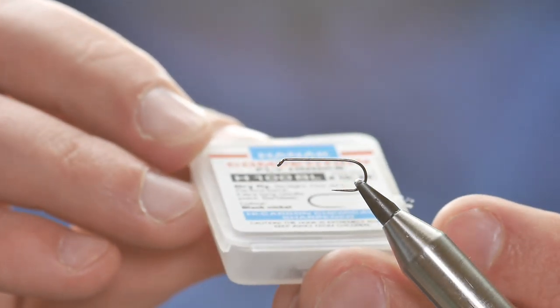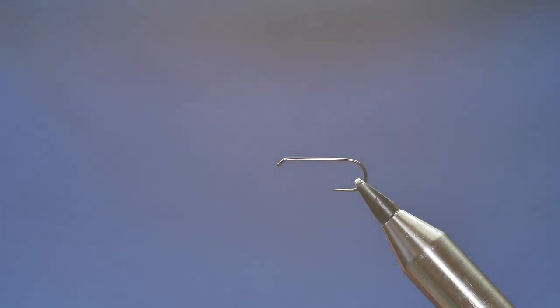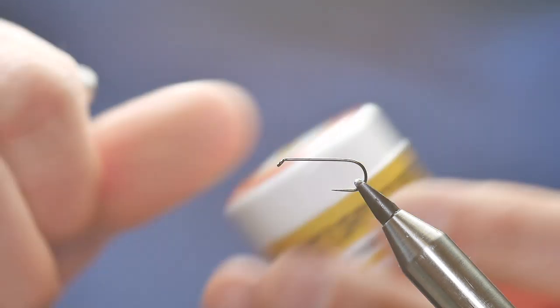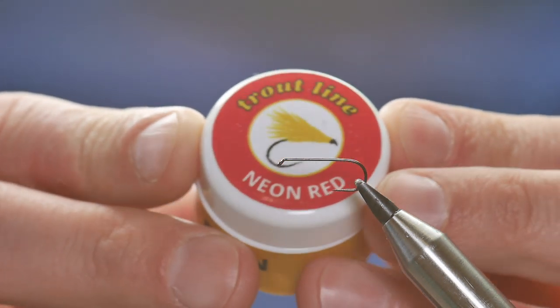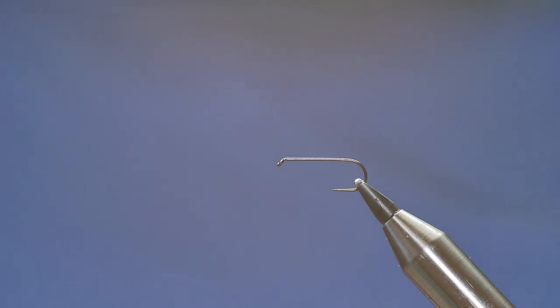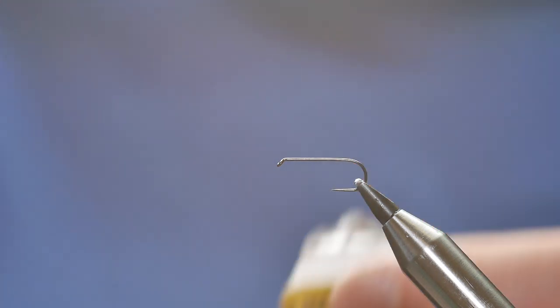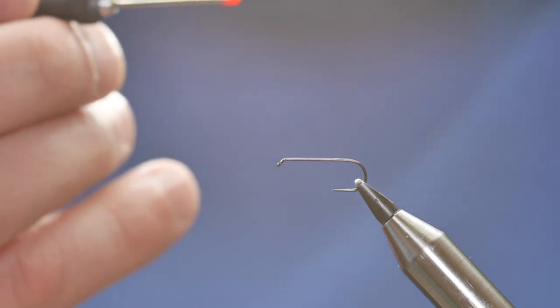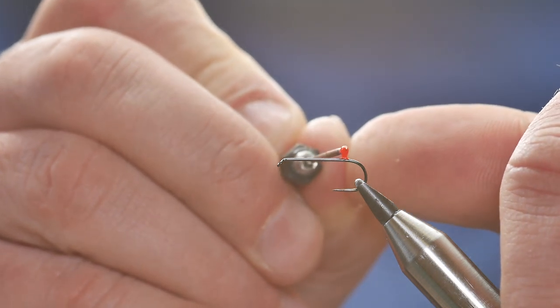In the vise then is a Hanak H100 barbless hook at size 10. Now, the first thing I'm going to do is I'm not going to cast thread on. I'm going to add a little hot spot in the back. What I'm using is this UV hot spot resin from Troutline, this is the neon red. It comes in a little tub. It's fairly thick stuff. I've been using it for a while now and it's really easy to use for creating a hot spot. I'm just going to open my vise up and I want it to be near the back of the hook.